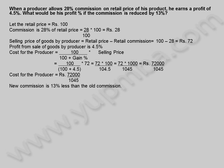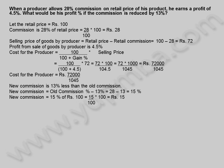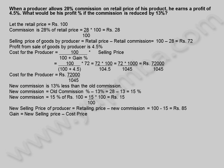New commission is 13% less than the old commission. New commission = 28 − 13 = 15%. New commission = 15% of 100 = 15 rupees. New selling price of producer = 100 − 15 = 85 rupees.